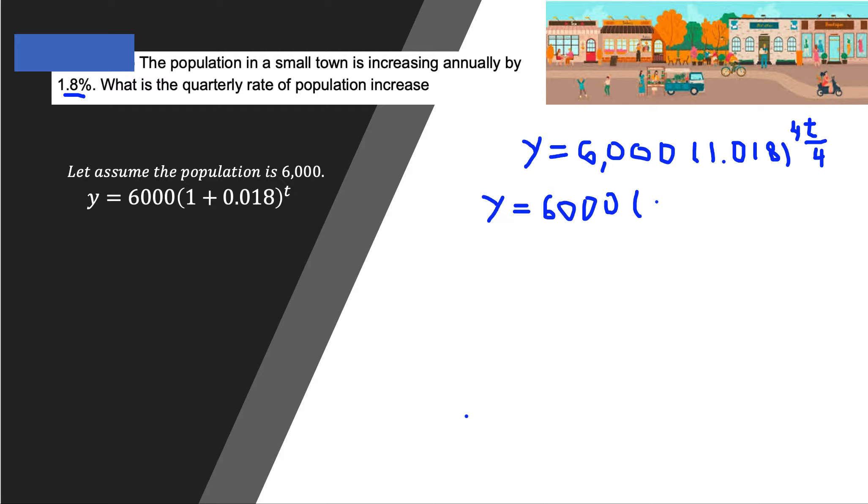6000 times 1.018 in exponent one over four, in exponent one over four, and everything is in exponent t divided by four.